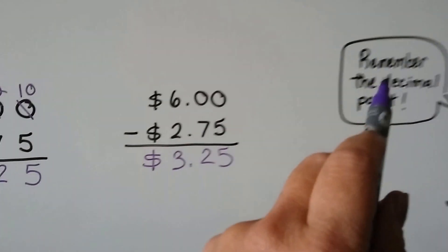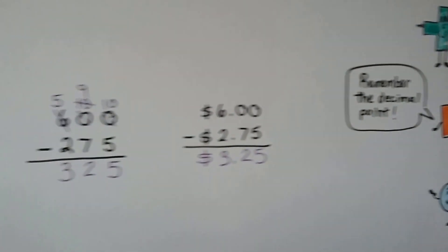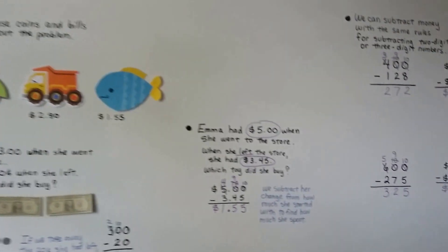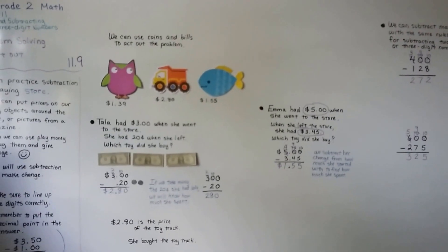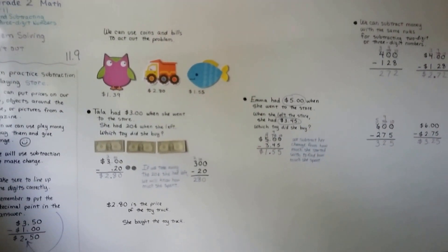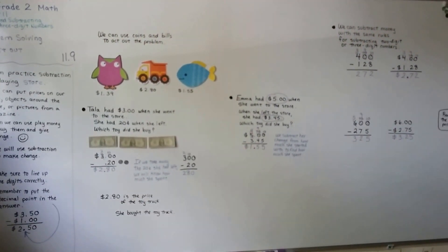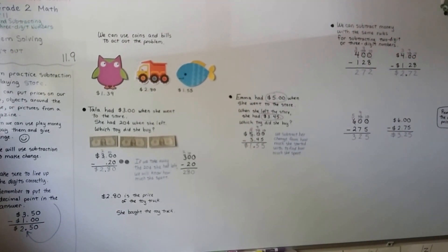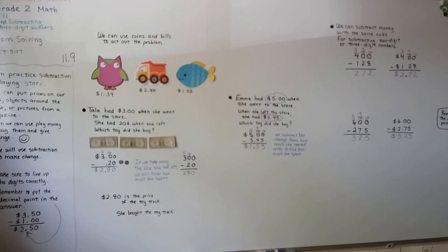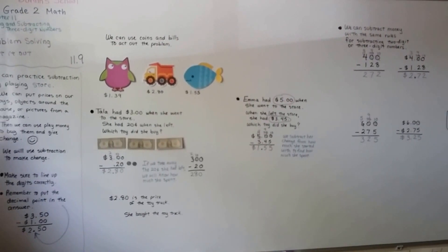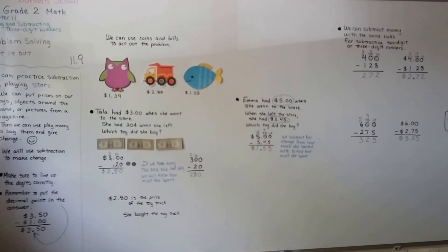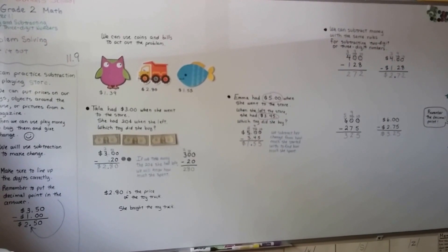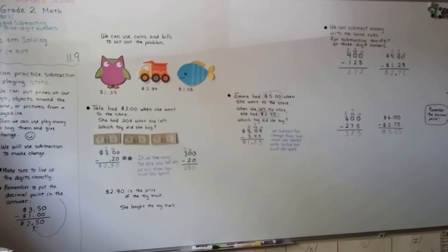Just make sure you remember the decimal point. We can subtract money and play store, acting out giving change. If you don't have play money, you can get pieces of paper and write the value on them, or even make pretend coins with little squares or circles of paper. I'm going to do more subtraction of money in the next video. I hope this video was helpful — hit the like button if it helped you. See you next time!